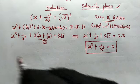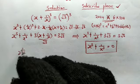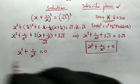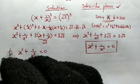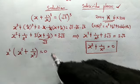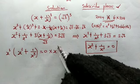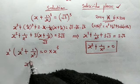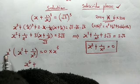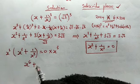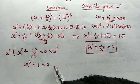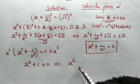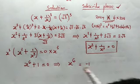From where we arrived, we have x³ + 1/x³ = 0. Let's multiply both sides by x³. So x³ times x³ gives x⁶, plus x³ times 1/x³ gives 1, and this equals 0. This implies that x⁶ = -1.